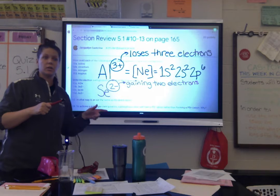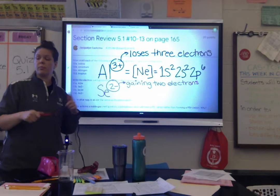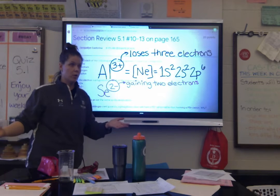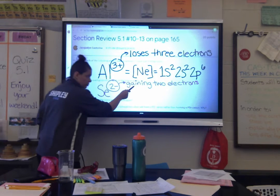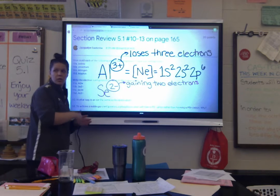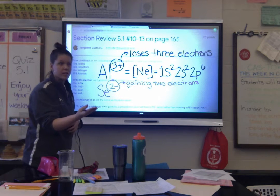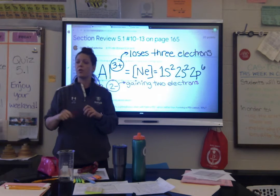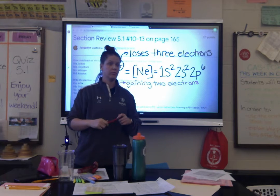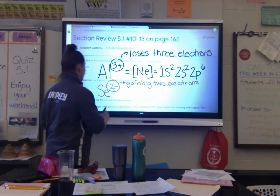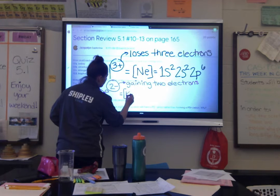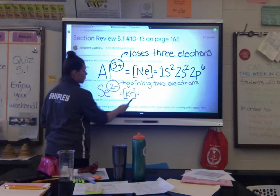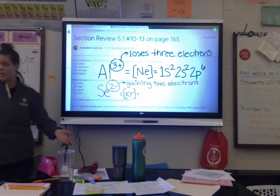Atoms are neutral — they have no charge. Ions have a charge: cations are positive, anions are negative. So the difference is the number of electrons. We change the number of electrons to either gain them and become negative or lose them and become positive. So what's different between an atom and an ion is the number of electrons.